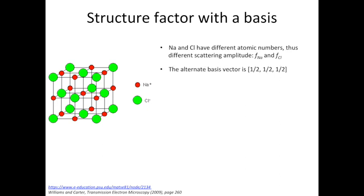When we look at the relative positions of sodium and chlorine atoms in the unit cell, they are off by the basis vector of half, half, and half. If the chlorine atom is at the origin, the sodium atom is at the center of the unit cell, so it's half, half, and half. So the structure factor can be written in this form.